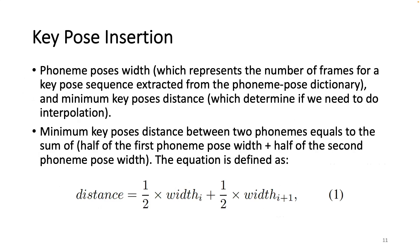To generate a sequence of pulses, we need to do k-pulse insertion of the missing pulse between key poses. We go through all phonemes one by one in speech and find their corresponding pulses in the Phoneme Pulse Dictionary. When we insert a pulse into a video, an interpolation is performed in their pulse parameter space. We determine the interpolation strategy by taking into consideration the following factors: Phoneme Pulse size, which represents the number of frames for a key-pose sequence extracted from the Phoneme Pulse Dictionary, and the minimum key-pose distance, which determines if we need to do interpolation.